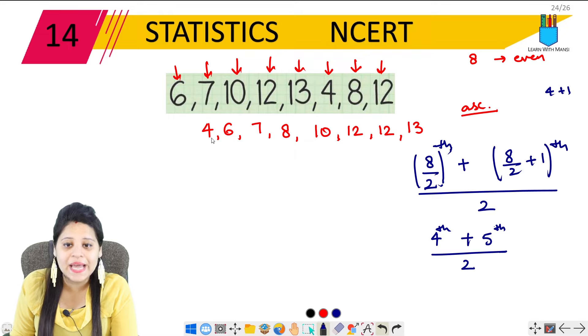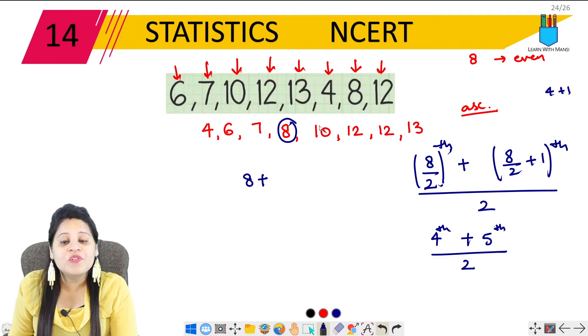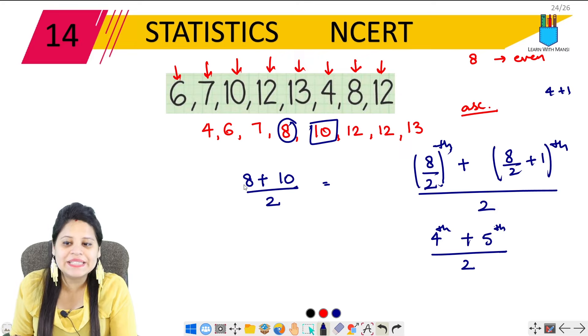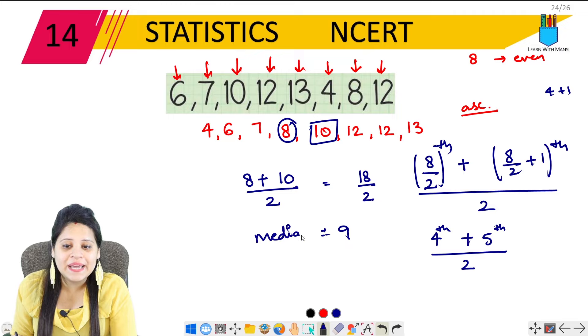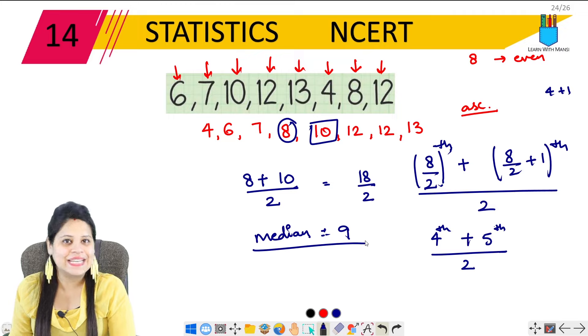So what we have done now? We have our data in ascending order. Now since we have even, the formula is 8 upon 2th term plus 8 upon 2 plus 1th term, and the average of both upon 2. So 8 upon 2 is 4, 4th term plus 8 upon 2 is 4 plus 1 is 5, so 4th term plus 5th term upon 2. Now what is 4th term? 1, 2, 3, 4 is 8. Plus 5th term is 10 upon 2. 8 plus 10 is 18 upon 2 which equals 9. So this data median is 9.